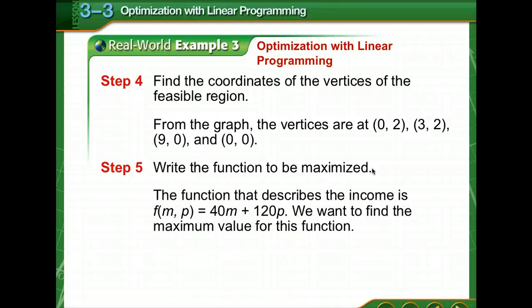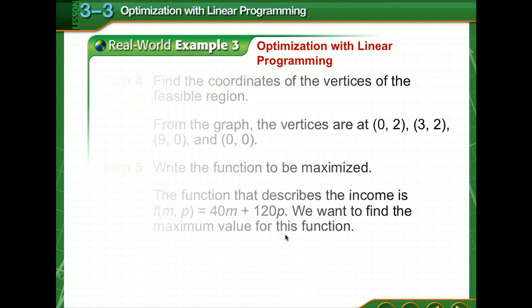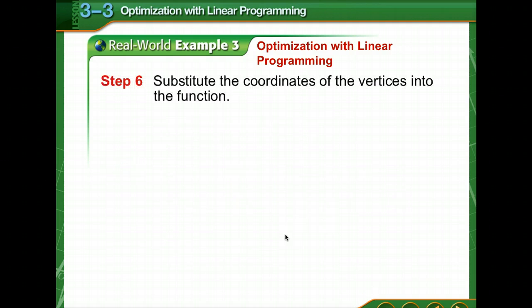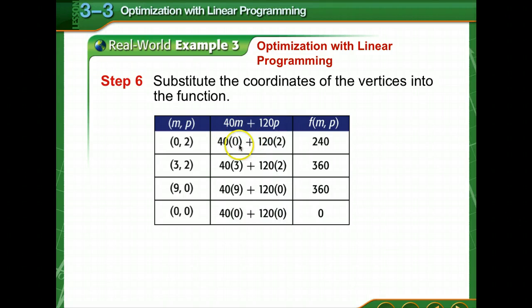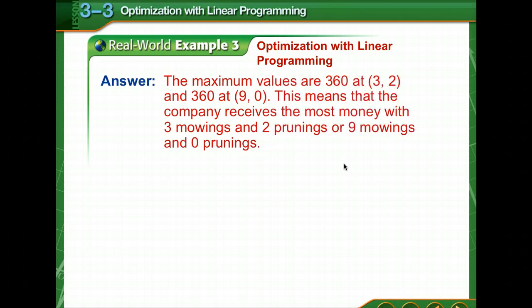We have to also write the function to be maximized. Okay, so the function we're going to use, 40m plus 120p. We want to find the maximum value for this function. So we substitute the coordinates of the vertices into that function. So there are four coordinates. We substitute each m and p into the function, and this is what we get. We select the greatest amount. There's two at 360, if you notice. 360 at 3 and 2. This means that the company receives the most money with three mowings and two prunings, or nine mowings and zero prunings.